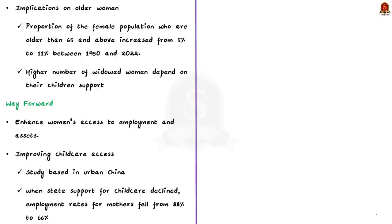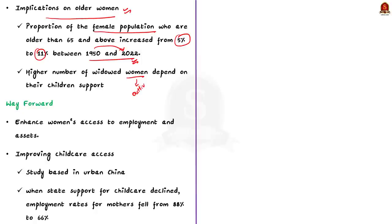The article also highlights the implications of demographic change on older women. With increased life expectancy, the proportion of female population aged 65 and above increased from 5% to 11% between 1950 and 2022. Since women tend to marry older men and are more likely to outlive their husbands, this has led to a higher number of widowed older women. These widowed women often face economic challenges and depend on their sons for financial support — a clear gendered disadvantage.